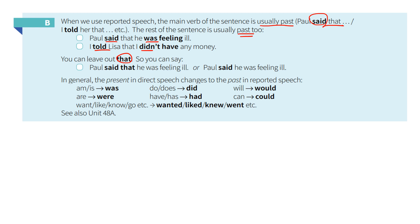In general, the present in direct speech changes to the past in reported speech. For example: I am / he is → was; do / does → did; will → would; are → were; have / has → had; can → could; want, like, know, go, etc. → wanted, liked, knew, went, etc.